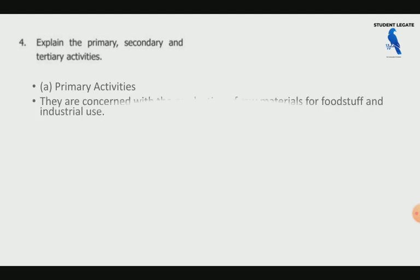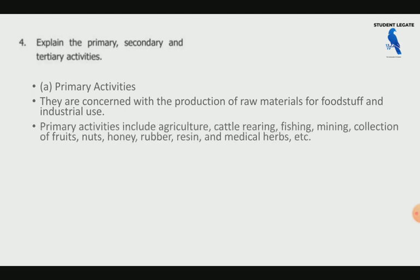Explain primary, secondary, and tertiary activities. Primary activities involve the production of raw materials. Examples of primary activities are agriculture, cattle rearing, fishing, mining, and collection of fruits, nuts, honey, rubber, resins, and medicinal herbs.